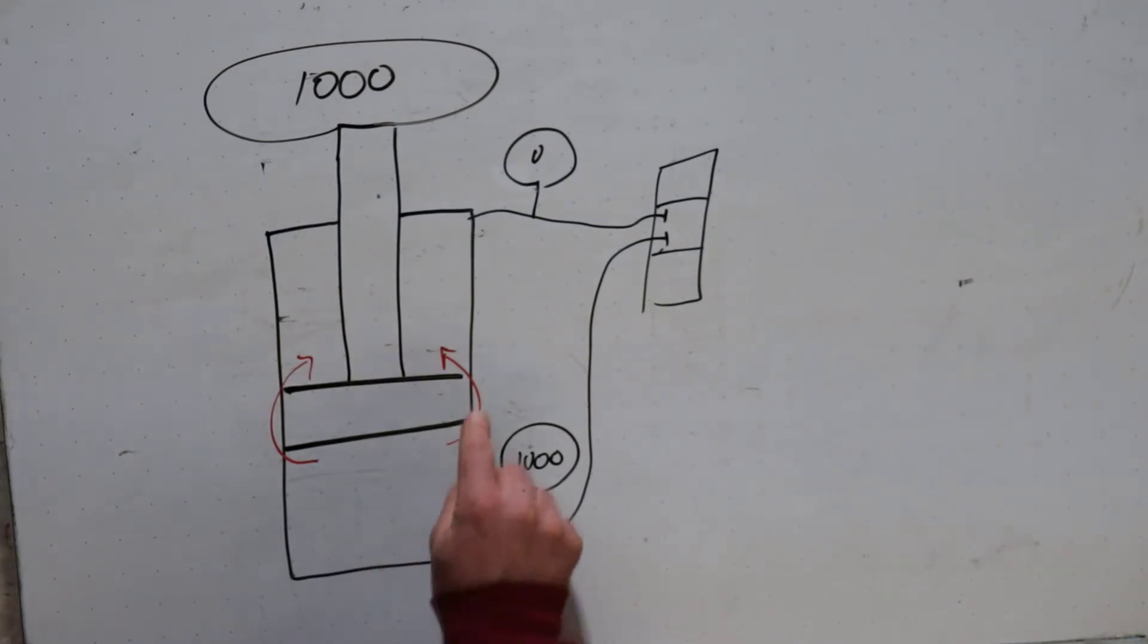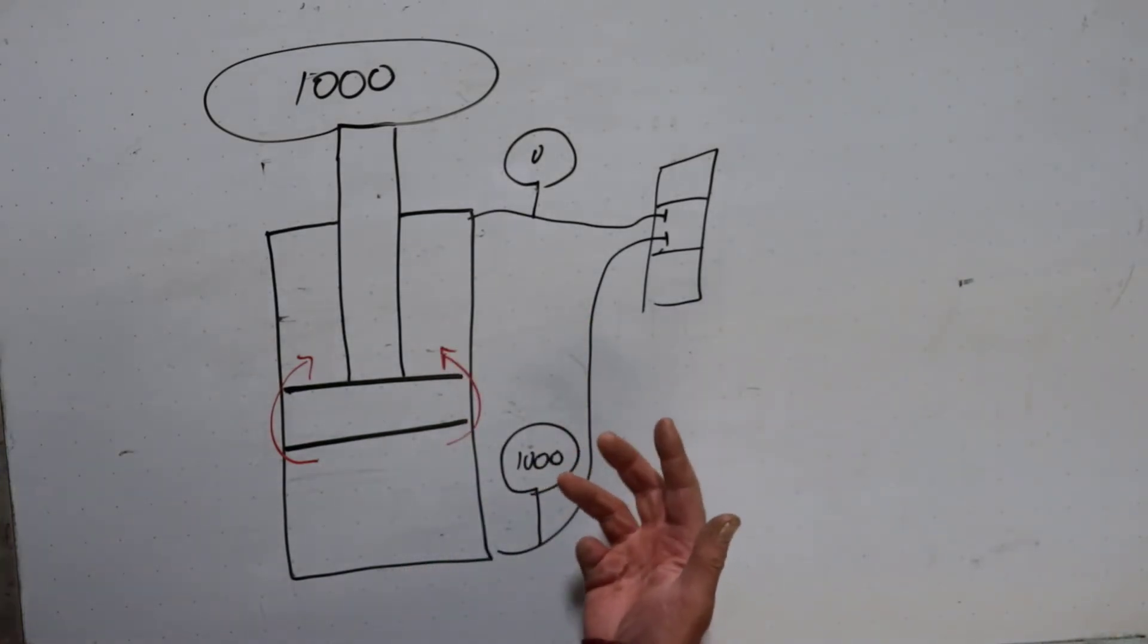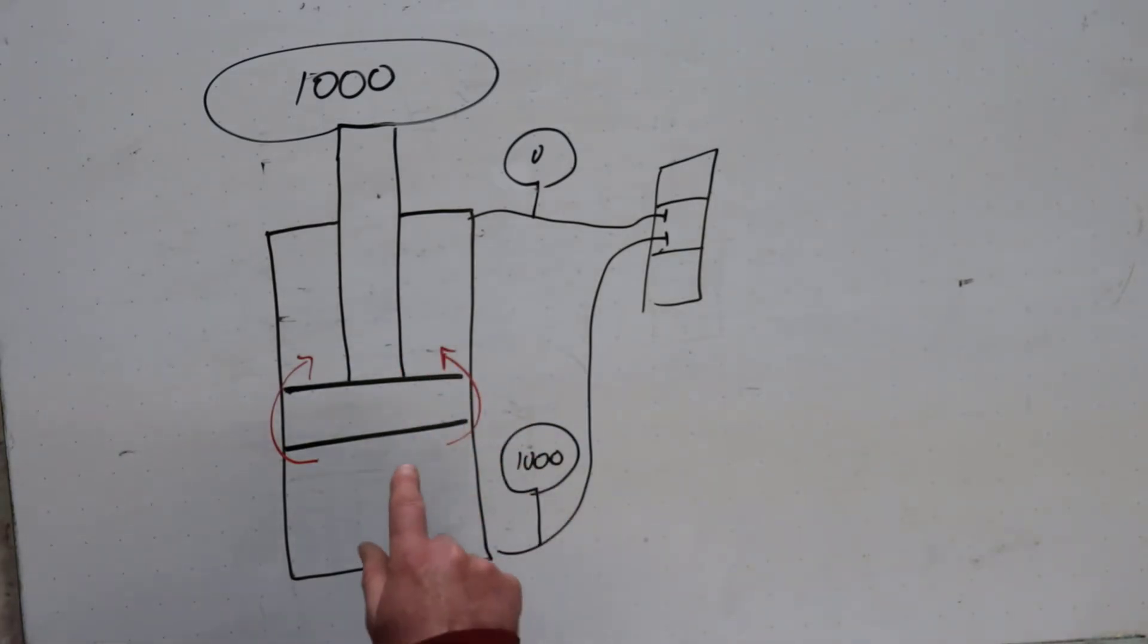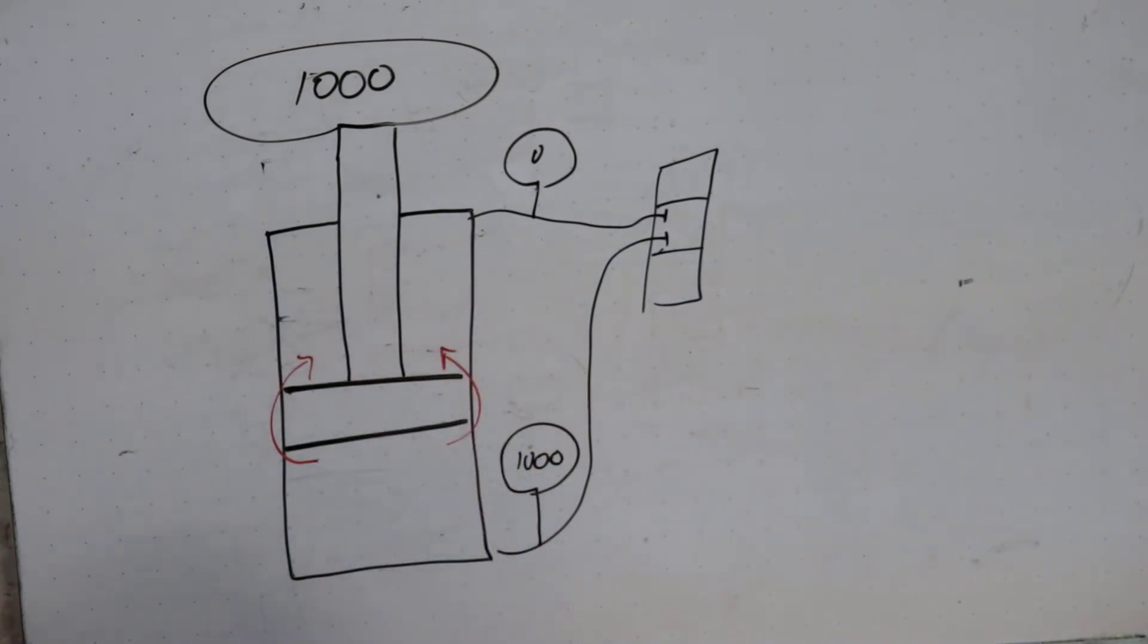So if this oil has to transfer into here and let the load come down, this oil physically has to fit in there. And theoretically oil isn't compressible, so it can't fit in there. So if it can't fit in this side, the cylinder can't come down.